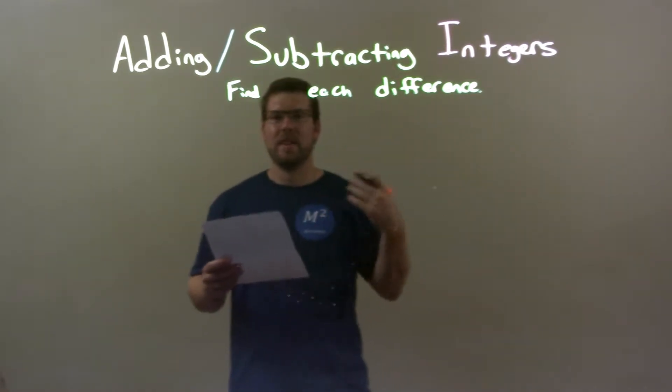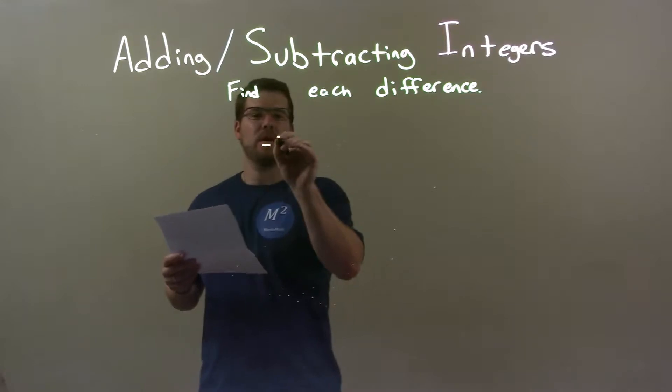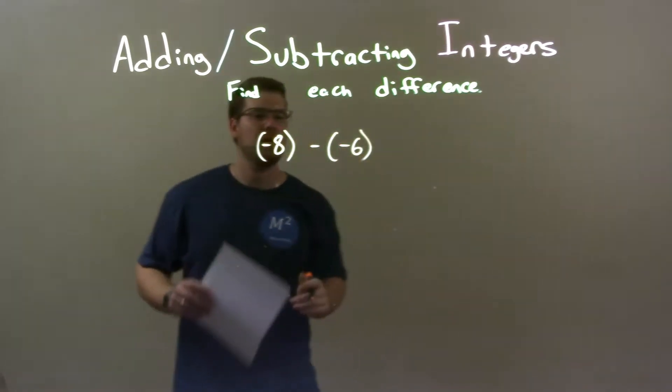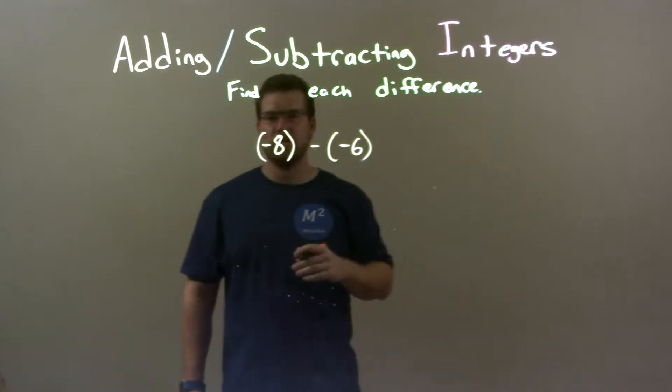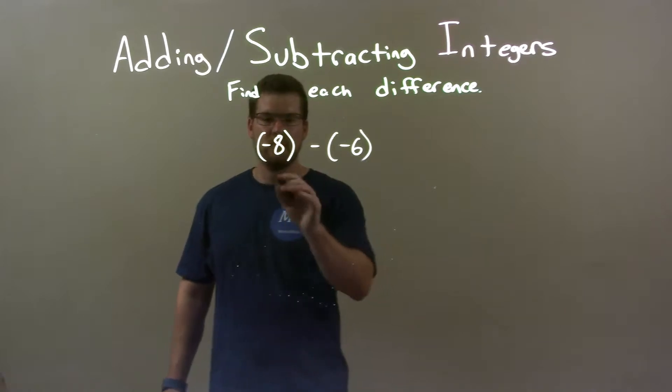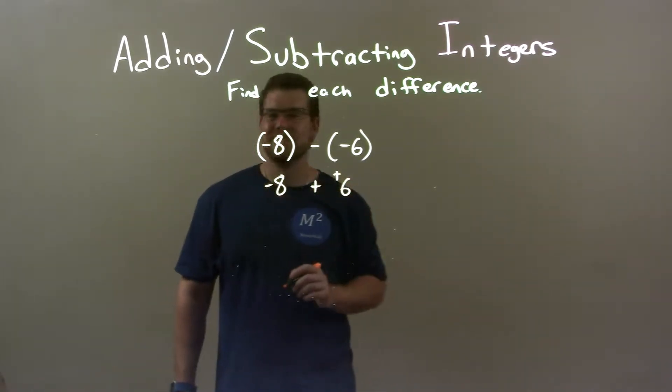If I was given these numbers, negative 8 minus a negative 6. So we have negative 8 minus a negative 6. We know subtracting a negative is the same thing as adding a positive, so I like to see it that way. Negative 8 plus a positive 6.